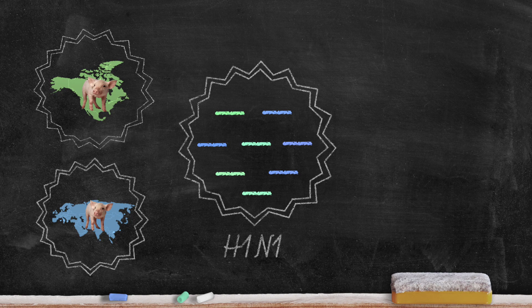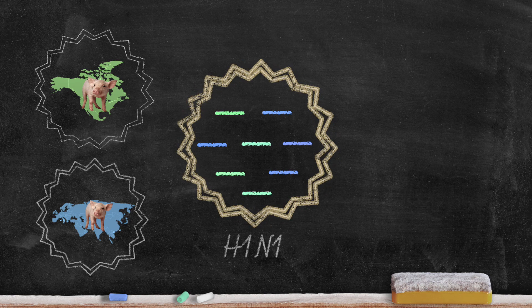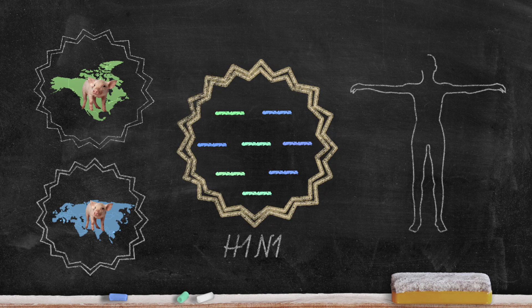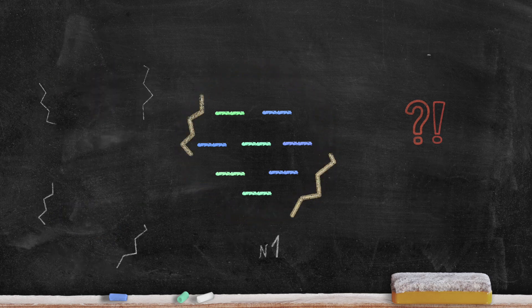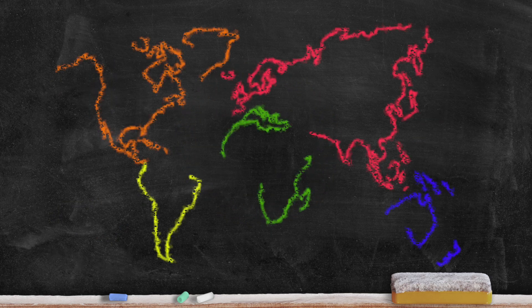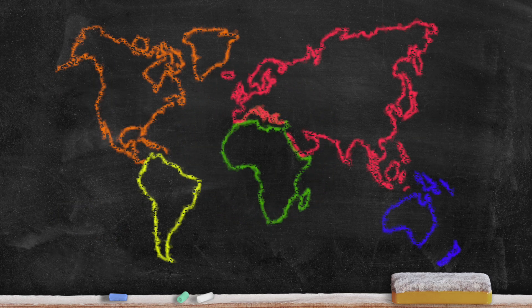When this happened, the hemagglutinin proteins coded for the virus were changed, such that the human immune system could no longer recognize the flu virus antigen, leading to a global pandemic.